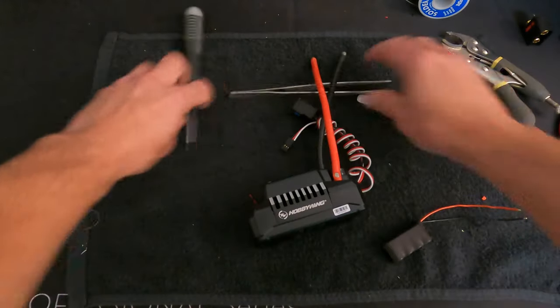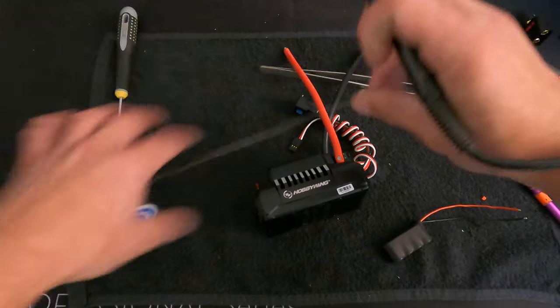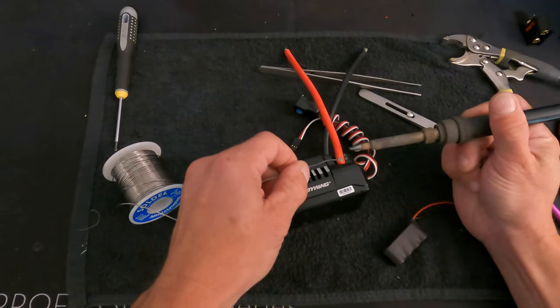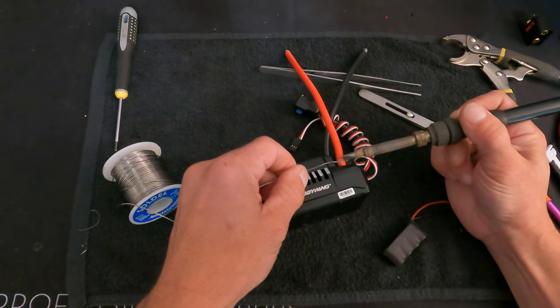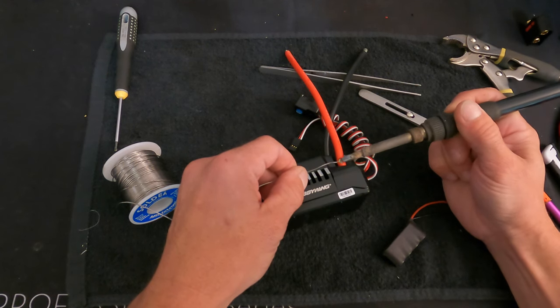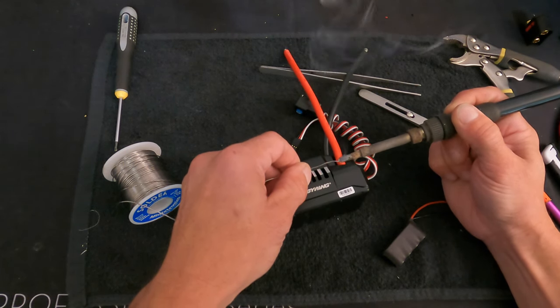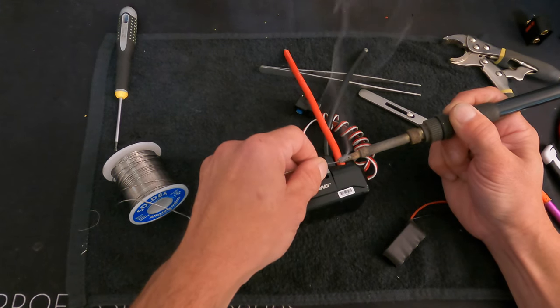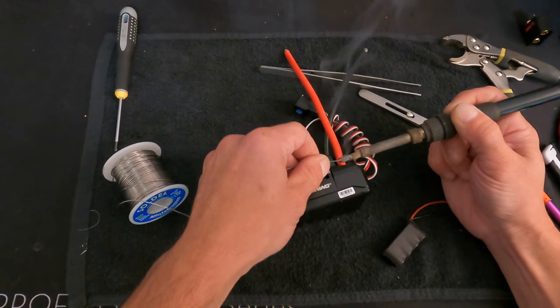So insulating all of this is also very important. Shrink tubing is going to be better than electrical tape for most situations. But if you have to use electrical tape, it's better than using nothing. That's what I always say. So I'm just going to add some solder onto here. Make sure it gets enough to flow a little bit.